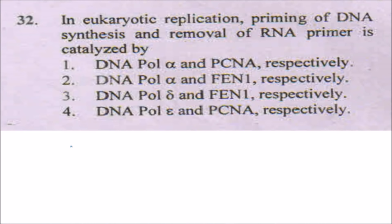The next question about types of eukaryotic polymerases and their functions — I have discussed this previously. The answer will be number two, where DNA polymerase alpha is involved in the primary priming activity or primase activity, and FEN1 is used for the removal of the primer.